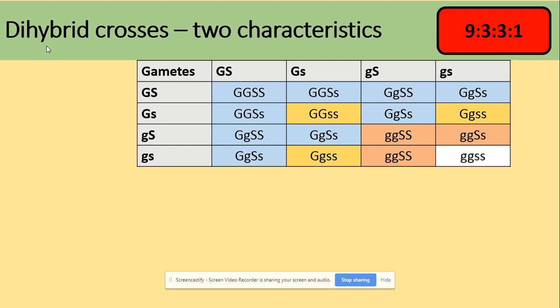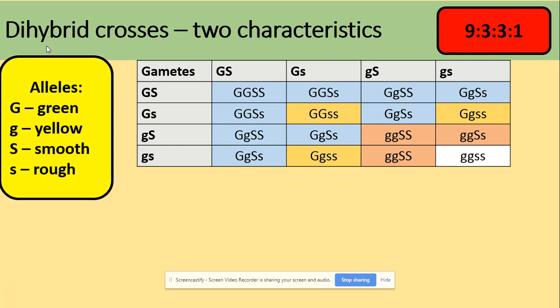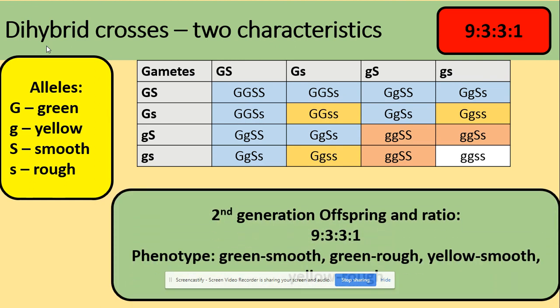So there were our two characteristics — that's the offspring we produced in the previous video. To work out the phenotypes and genotypes, we will get the ratio nine to three to three to one. So we will have green and smooth individuals, which are shown here — all of those blue ones. We've got nine in total that are green and smooth.